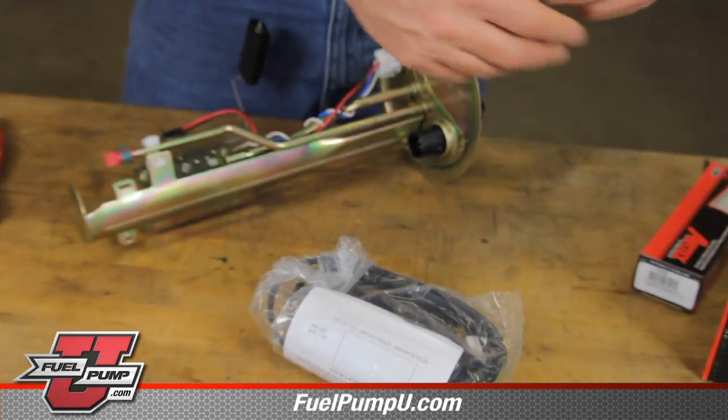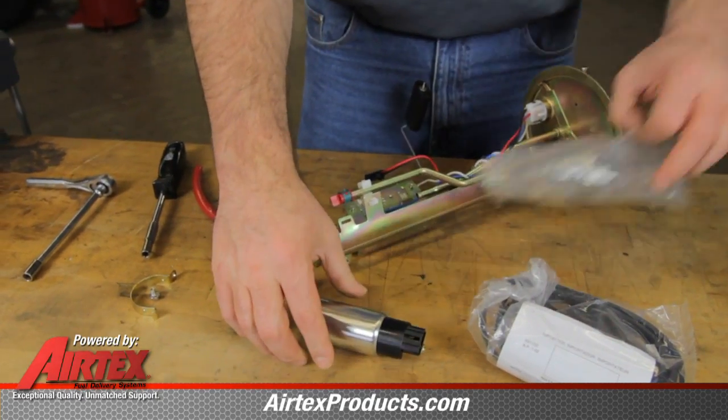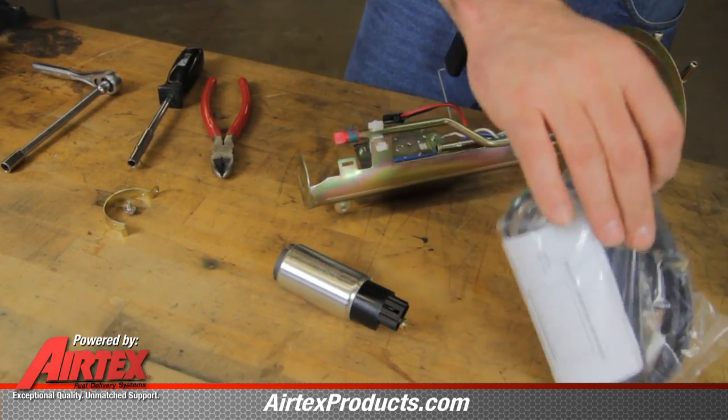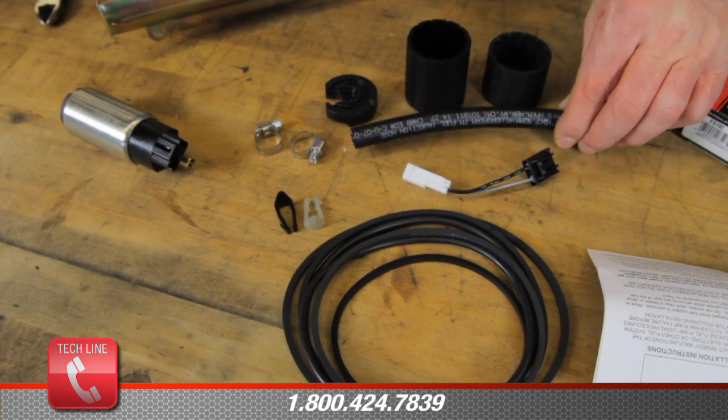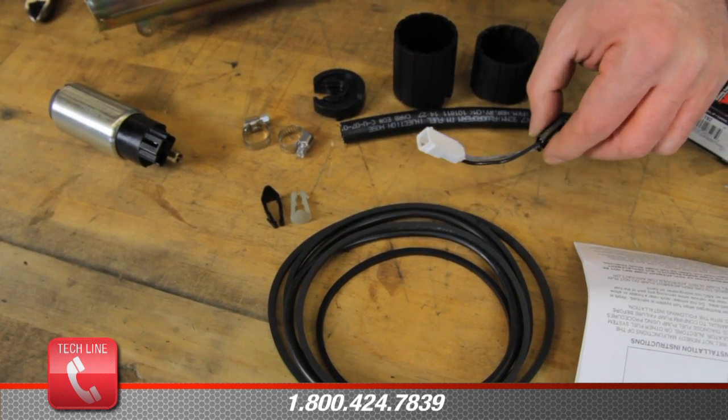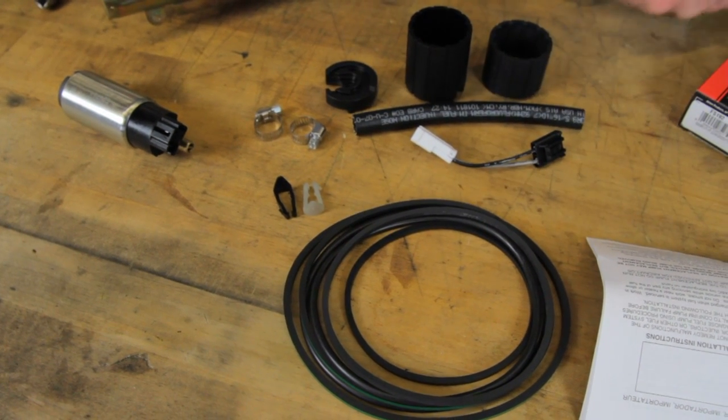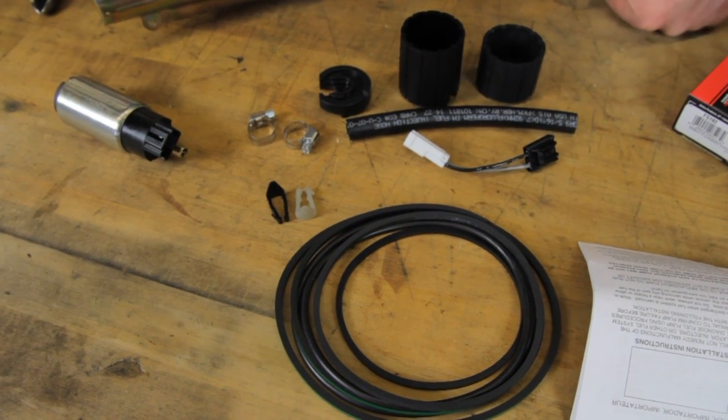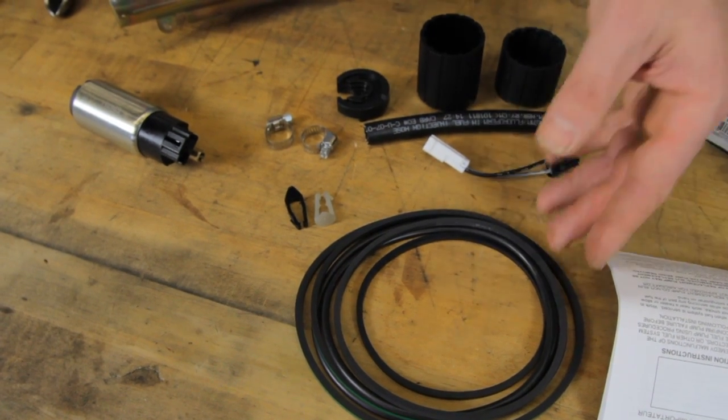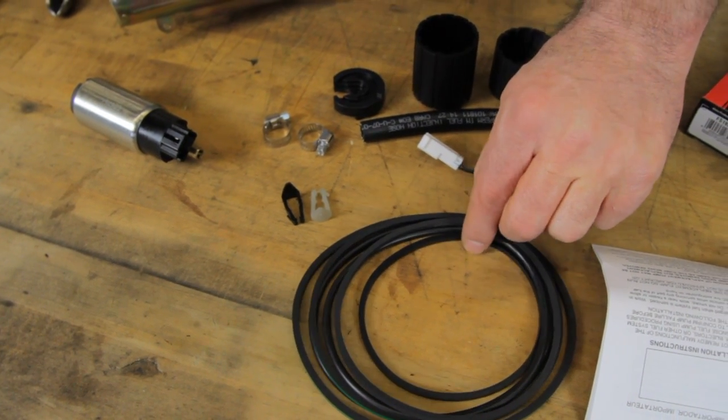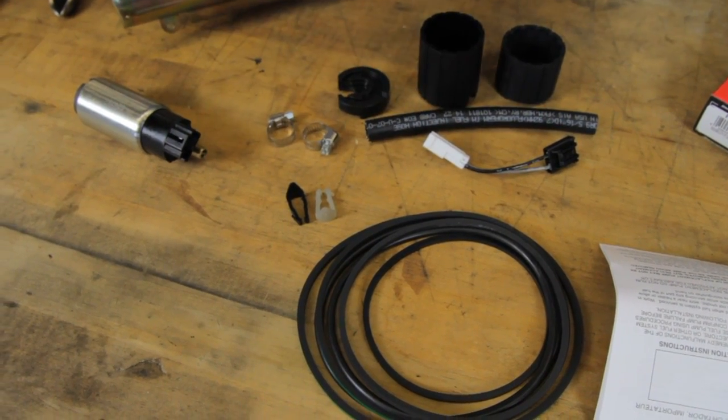Now we'll take the new AirTex fuel pump, remove it from the packaging. In with the installation packet, you have three isolators, a length of rubber hose, an electrical adapter, multiple tank seals. This particular fuel pump fits several different applications. Be sure to match up the correct tank seal with your application. We have two fuel line clips and we have two hose clamps.